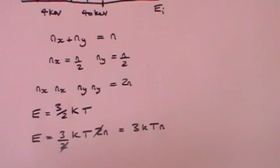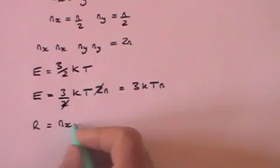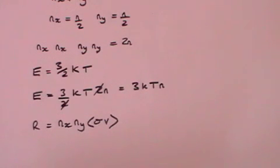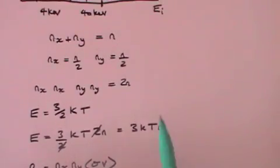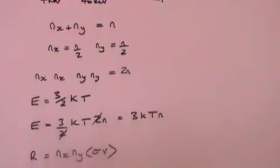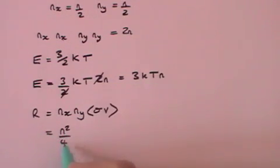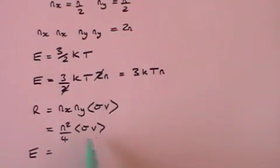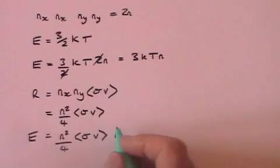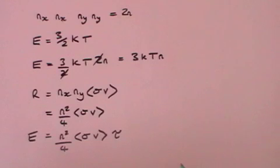So that's the energy that you have to put in, and that will determine the temperature. The rate of reaction we've already shown is equal to NX, NY times this factor sigma V, the number of X, the number of Y, and that combination of cross-section and velocity. NX, we said was N over 2, and NY is N over 2. So NX and NY is N squared over 4. So that's going to equal N squared over 4 times sigma V. That's the rate. Now, the actual energy out is going to be the rate times the time you allow it to happen times the energy you get out from each reaction. So it's the rate N squared over 4 sigma V times the time for which this happens, because remember this is a rate per second, so we've got to multiply by a time, times the energy you get out for each fusion reaction, which we'll call Q.